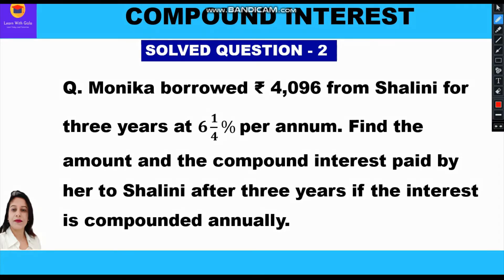Monica has borrowed rupees 4096 from Shalini, so this is our principal. She has borrowed for a time period of 3 years and the rate of interest is 6¼ percent per annum, that is 25 by 4 percent per annum. We have to find the amount and the compound interest to be paid to Shalini after 3 years if the interest is compounded annually.